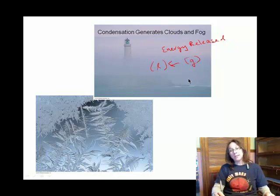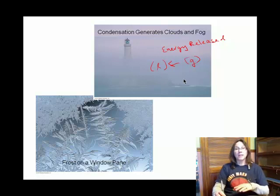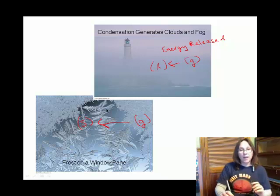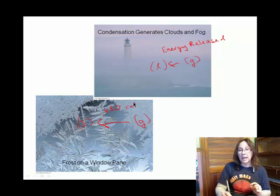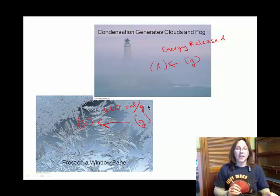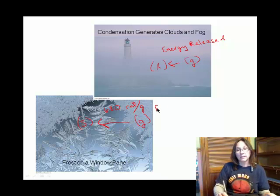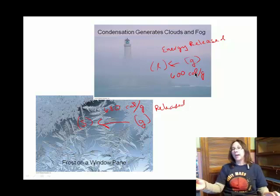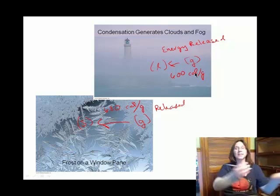Over here we have frost. Frost is a type of deposition where water goes straight from being a gas to being a solid. The latent heat of deposition is about 680 calories per gram of water vapor that deposits and forms a solid — that's the amount of energy released. For condensation, 600 calories are released for every one gram of water vapor that liquefies.